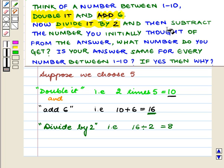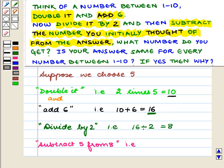Now, we have to subtract the number we have thought of from this number. That is, we have to subtract 5 from 8. We get 8 minus 5 equal to 3.